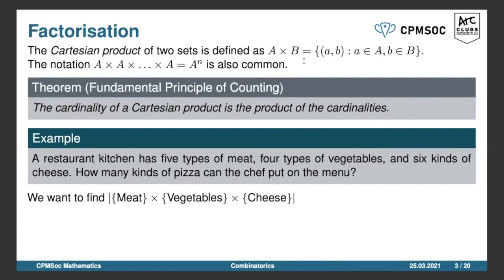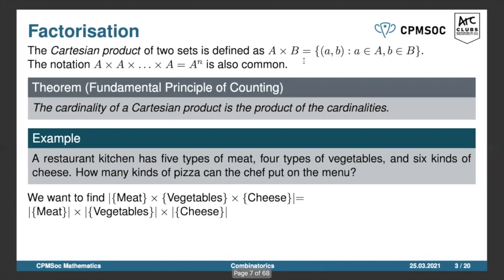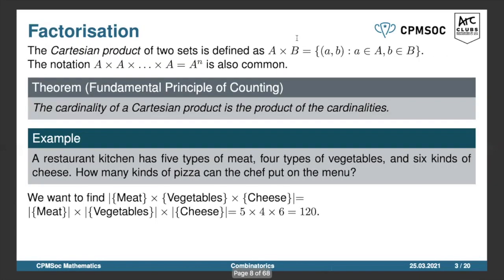We want to find the cardinality of the Cartesian product of these three sets. We know the cardinalities of the individual sets, so we can just multiply them together.